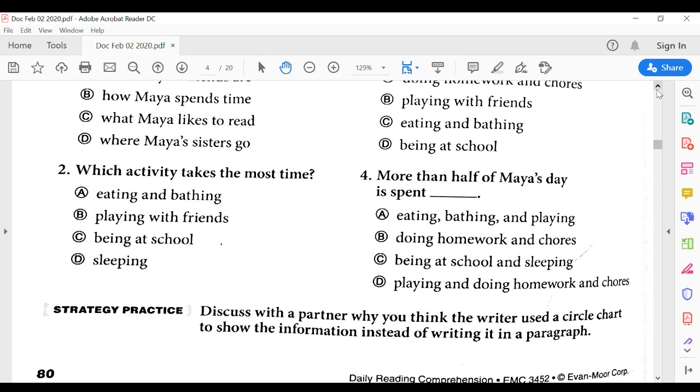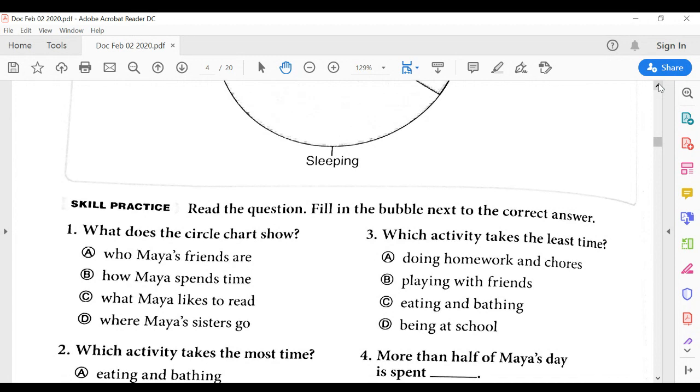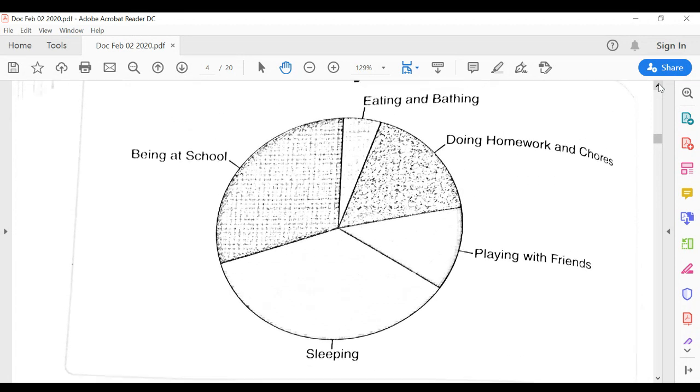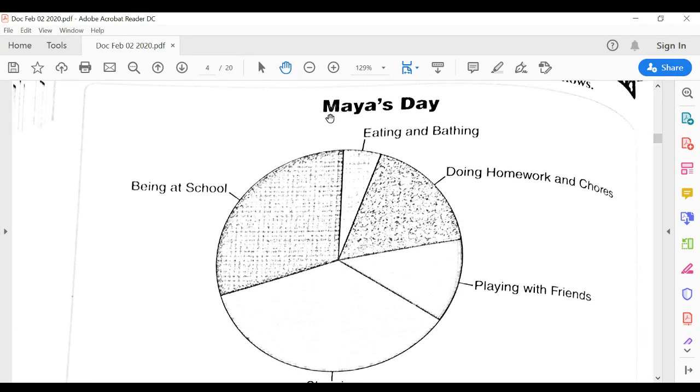The writer chose to use this information for organization, and the chart shows the daily activities of a girl called Maya. So here we are, this says Maya's day, and the author chose to show what Maya did.